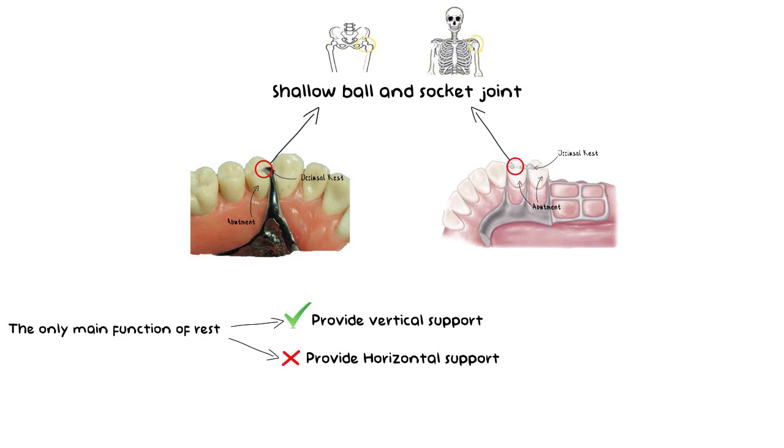If the occlusal rest also starts to provide primary stabilization against horizontal forces, then this may harm the abutment tooth by providing a leveraging effect onto the abutment and causing harmful forces to transfer onto the tooth which may lead to orthodontic type of movement. In short, during occlusal loading, occlusal rest only needs to provide vertical support and no horizontal support to the denture.